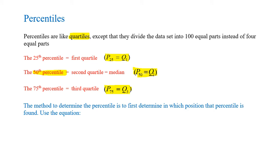The method to determine the percentile is to first determine in which position that percentile is found. For this, we use a very simple equation: Pj is equal to j divided by 100 multiplied by N plus 1. This N represents the sample size, so we simply take the sample size and add 1 to it.